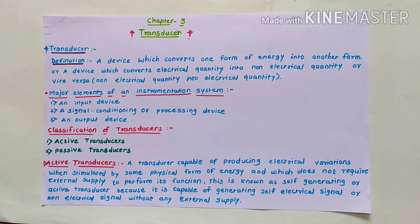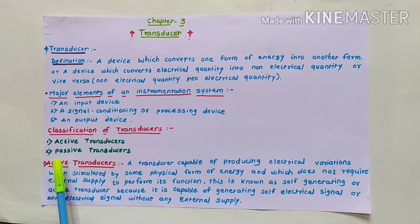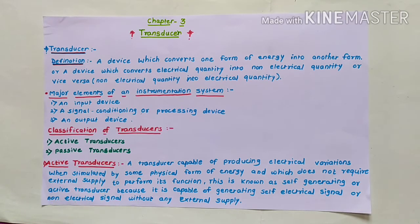Now let us see what are the types of transducers. Transducers can be classified into two types: active transducers and passive transducers. Let us see what is meant by active transducers.